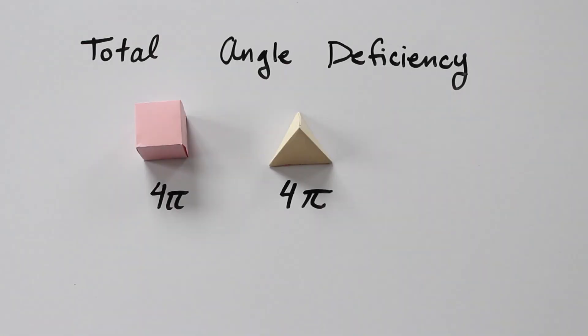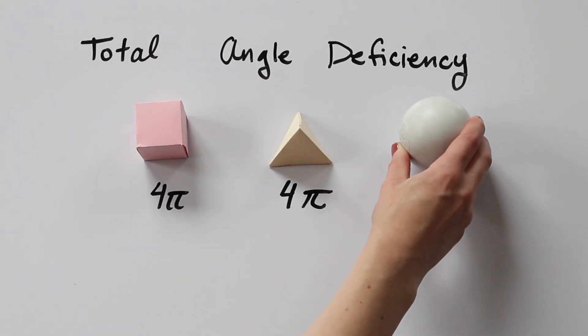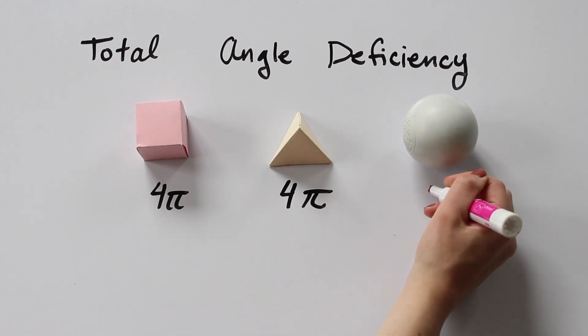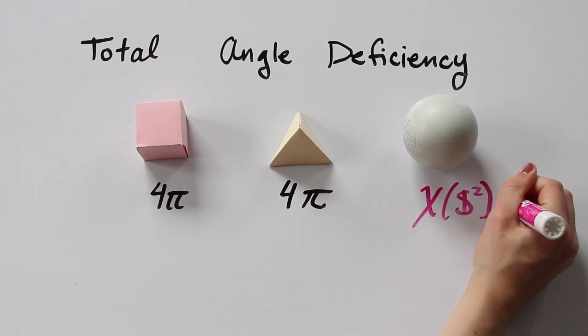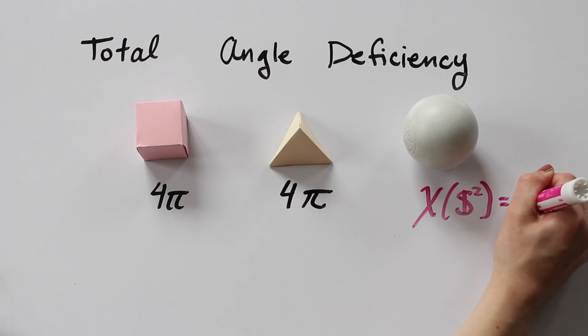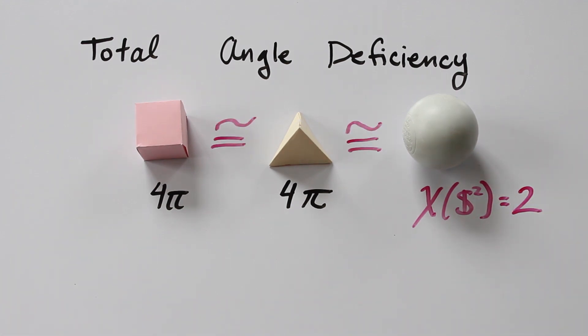Last time we saw that the cube and the tetrahedron have the same total angle deficiency. This is not merely a coincidence, but it is precisely because the cube and the tetrahedron are both homeomorphic to the sphere.